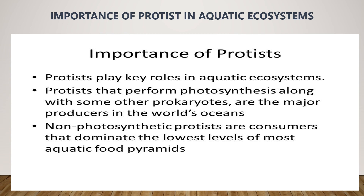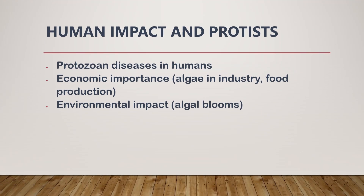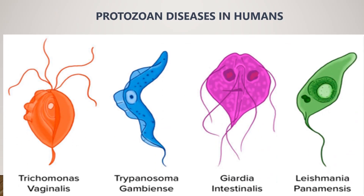The importance of protists in aquatic ecosystems: protists perform photosynthesis along with other prokaryotes and are major producers in the world's oceans. The non-photosynthetic protists are consumers and dominate the lower levels of most aquatic food pyramids. Some protists cause diseases, such as Trypanosoma which causes sleeping sickness, Giardia which causes stomach upset, and Leishmania which causes leishmaniasis in humans.